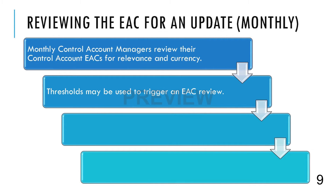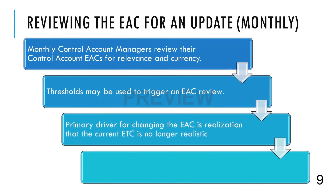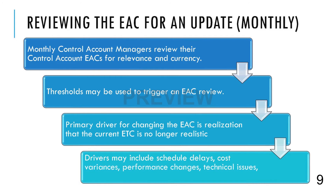The CAM knows the day-to-day issues and is in the best position to identify non-recurring and recurring cost impacts. This information assists the CAM in determining if the EAC needs to be updated, and if so, by how much. The primary driver for changing the forecast of costs is realization that the current ETC is no longer realistic nor consistent with the remaining work. Drivers which may cause a need to change the EAC include schedule delays, cumulative cost variances, changes in performance, technical performance issues, and realized risks.